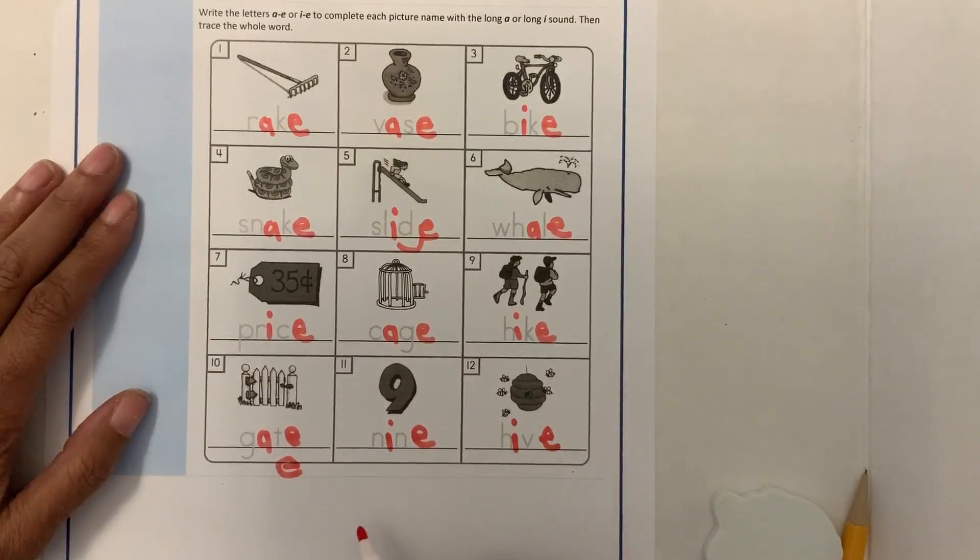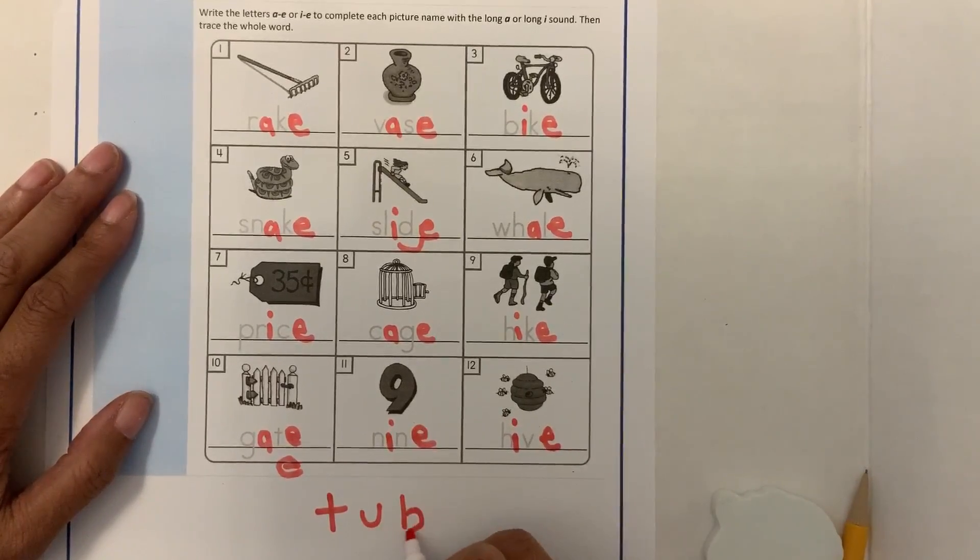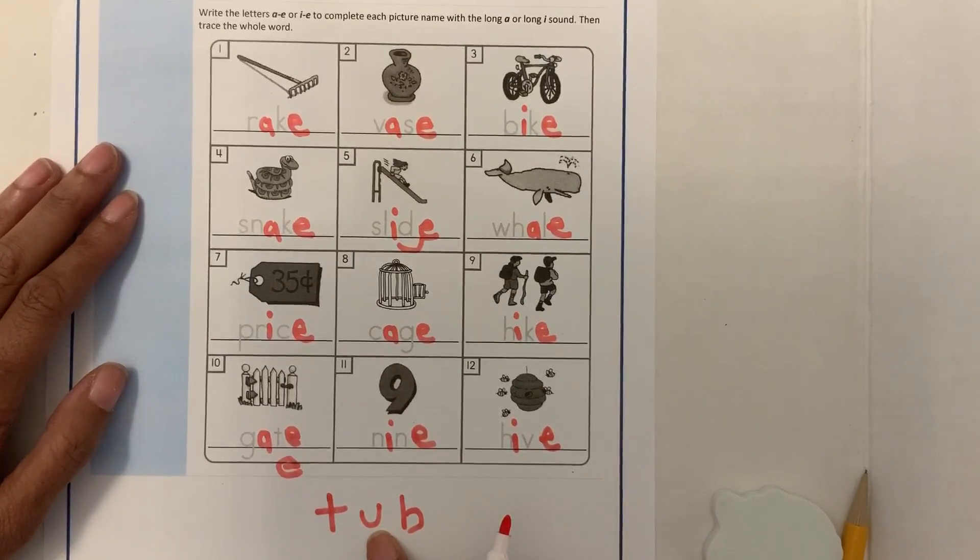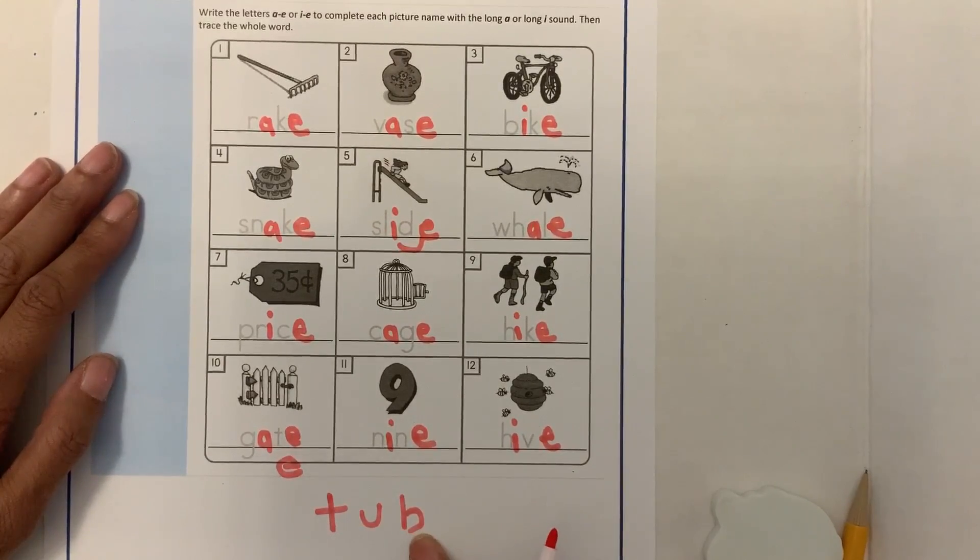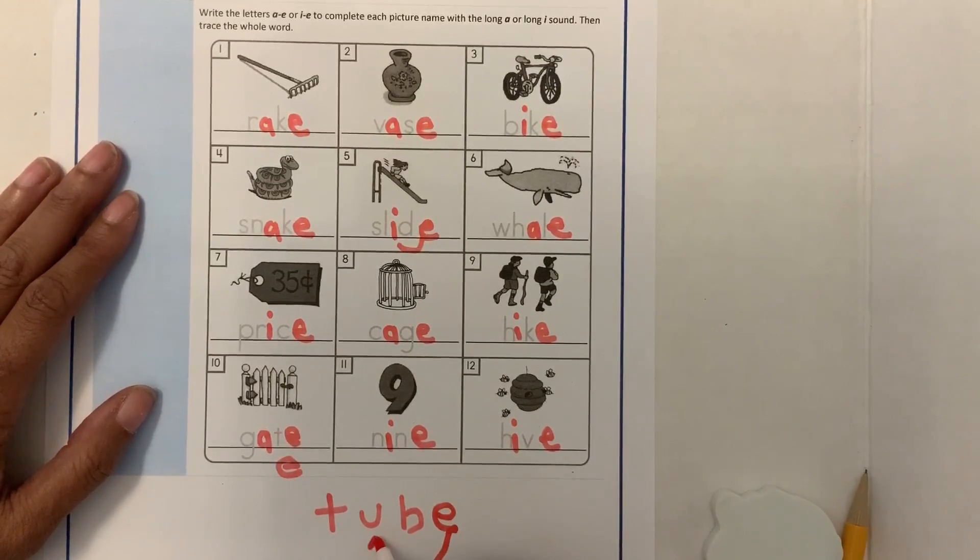And just remember when we use these sound out words, we would sound out the sound. When we do our foundations, we say short U for cup or short A for apple. So this would be T-U-B, tub. But when we add the silent E at the end, that makes this U change from short to long. So now it's tube, T-U-B-E.